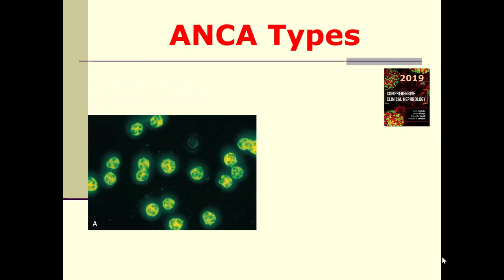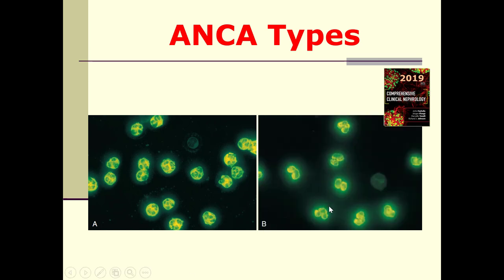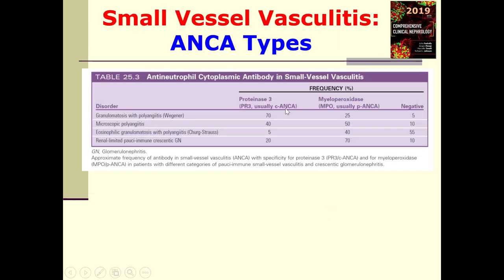Regarding ANCA, we have two types principally. Indirect immunofluorescence shows the cytoplasmic type (C-ANCA) and the perinuclear type (P-ANCA). Nowadays, there is a tendency to use ELISA alongside immunofluorescence to detect specificity for Proteinase-3 or Myeloperoxidase. Proteinase-3 ANCA was known as C-ANCA, and Myeloperoxidase (MPO) is usually P-ANCA.